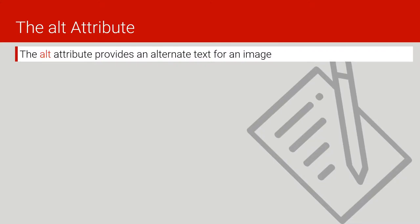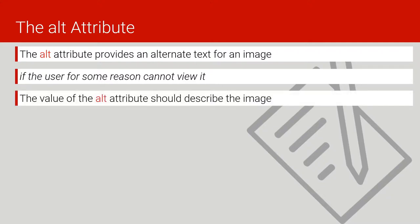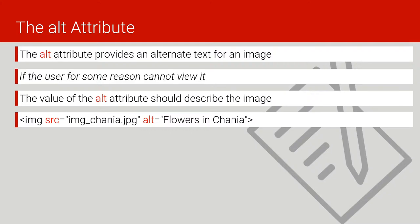The alt attribute provides alternate text for an image. If the user for some reason cannot view it, the value of the alt attribute shall describe the image. We add this alt attribute inside the image tag to explain what is inside the image. So in case the user fails to load the image, this attribute will be displayed as text.